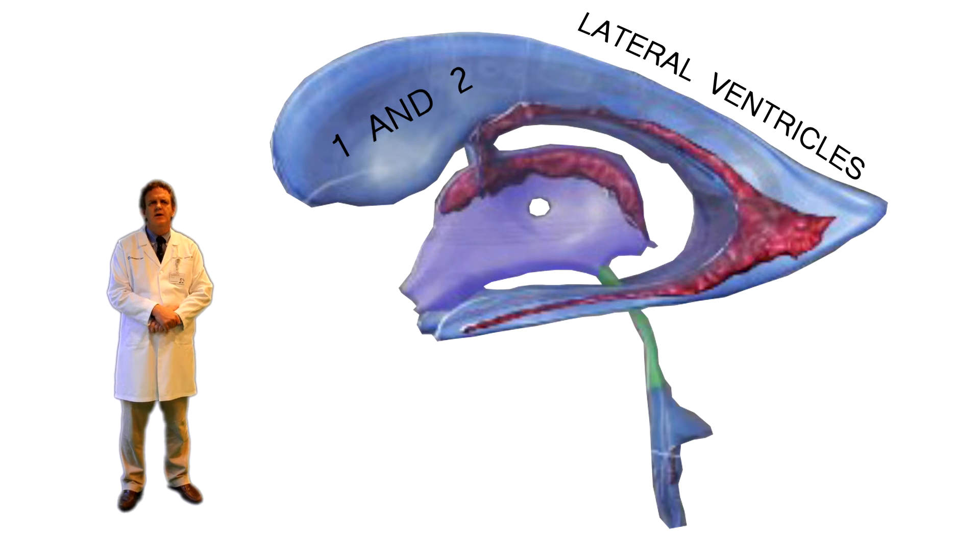The first and second ventricles located here are more commonly known as the lateral ventricles of the brain, since the word lateral, another way of saying out to the side, describes them perfectly. These two ventricles are right on top of each other and overlapping in this video, so it is difficult to distinguish between them.